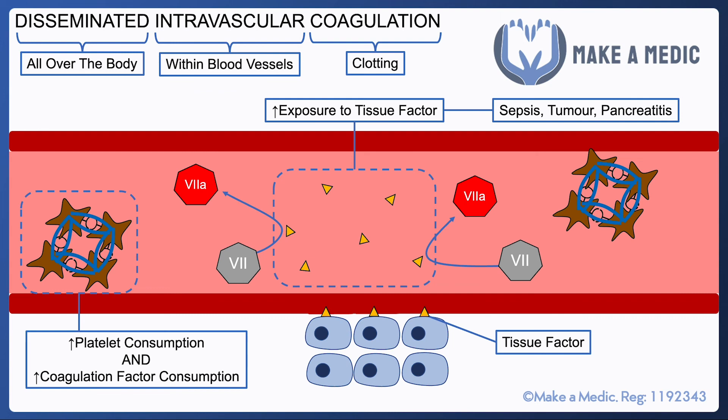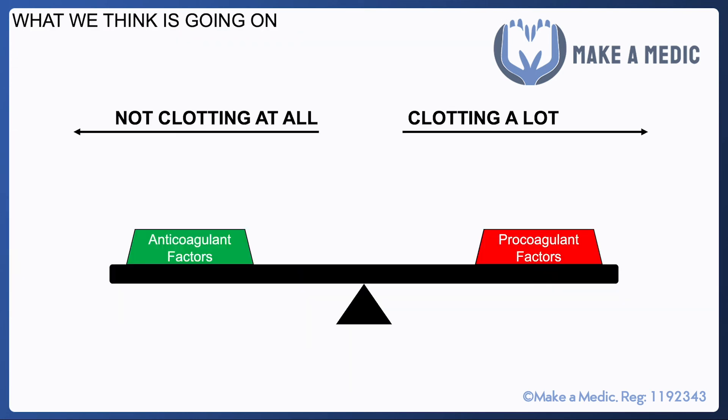Once this process has kicked off, it leads to an increase in platelet consumption, so the total platelet count goes down. It also leads to an increase in coagulation factor consumption, so all coagulation factors go down and the patient becomes massively at increased risk of bleeding. I used to find this a little difficult to understand because I always thought that anticoagulant factors and procoagulant factors exist in a sort of balance.